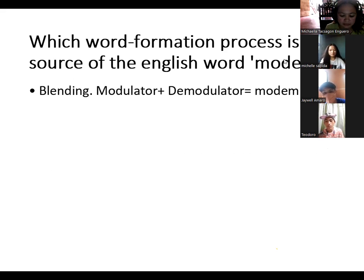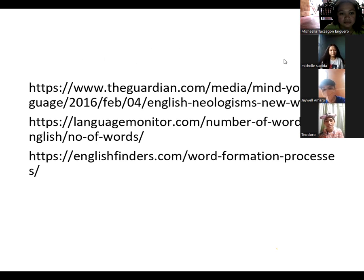For letter E, which word formation process is the source of the English word modem? The answer is blending. Basically, new words are formed or created by combining two different words and making it as one. It has two parts, which is modulator and demodulator. Modulation is the process of encoding words or information in different transmitted signals, while demodulation is the enhanced form of modulation. It carries the idea of the word and transmits it to the signal, and the signal will filter the word to create a new set of meaning. That's the end of our short group discussion about how new words are formed. Thank you for listening and have a great day ahead.